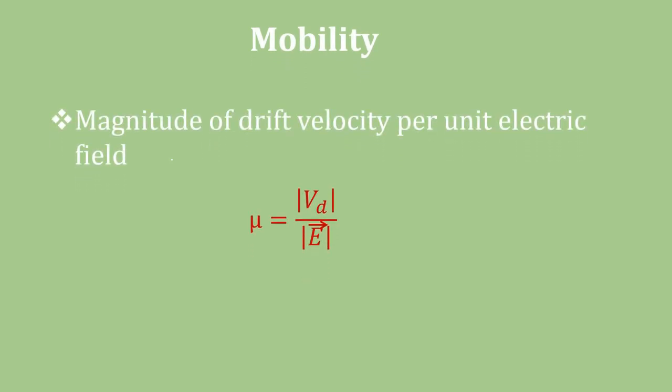What is mobility? Mobility is the magnitude of drift velocity per unit electric field. Mu is equal to magnitude of Vd divided by magnitude of electric field. Its unit is meter square per volt per second.